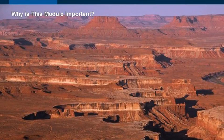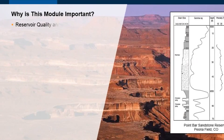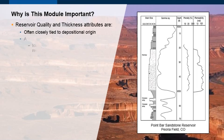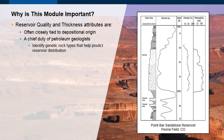Why is it important to understand the depositional controls for reservoir rocks? The reason is that reservoir quality and thickness attributes are often closely tied to the depositional origin of the rock. So, in order to properly understand and characterize the reservoir rock, we need to understand its depositional origin. For a petroleum geologist, an important duty is to identify genetic rock types in order to help predict reservoir distribution.